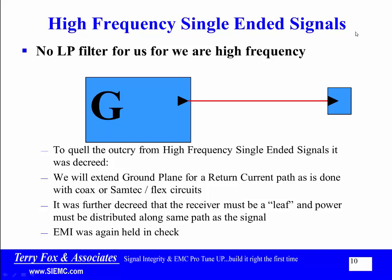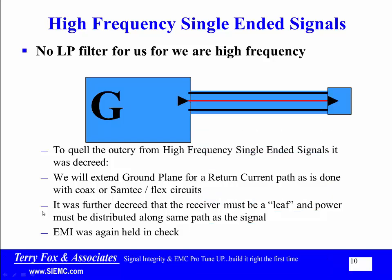High-frequency single-ended signals said, no low-pass filter for us, for we are high-frequency — we can't have a low-pass filter. To quell the outcry from high-frequency single-ended signals, it was decreed: we will extend the ground plane for a return current path, as is done with coax or SAMTEC connectors with flex circuits. It was further decreed that the receiver must be a leaf, and that power must be distributed along the same path as the signal. EMI was again held in check.